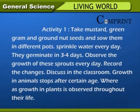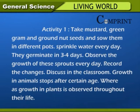Activity 1: Take mustard, green gram, and groundnut seeds and sow them in different pots. Sprinkle water every day. They germinate in 3 to 4 days. Observe the growth of these sprouts every day. Record the changes and discuss in the classroom. Growth in animals stops after a certain age, whereas growth in plants is observed throughout their life.